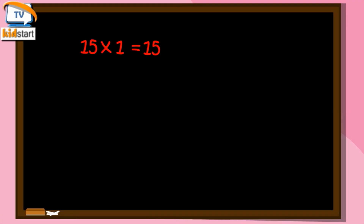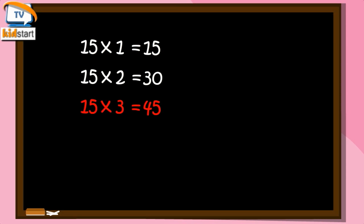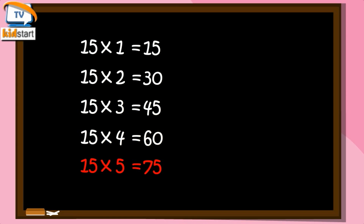Fifteen ones are fifteen. Fifteen twos are thirty. Fifteen threes are forty-five. Fifteen fours are sixty. Fifteen fives are seventy-five. Fifteen sixes are ninety.